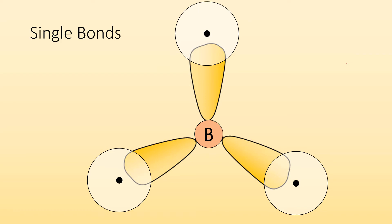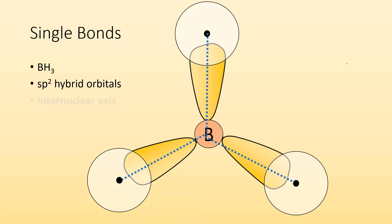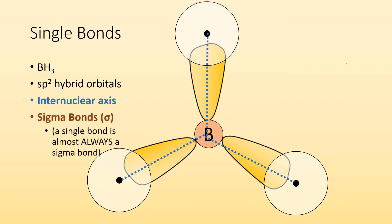For example, in BH3, boron has sp2 hybrid orbitals. So it has this trigonal planar shape, and then they overlap with the hydrogen's s orbital. So you can see each of those bonds occurs along their internuclear axis, which would make all of those bonds sigma bonds.